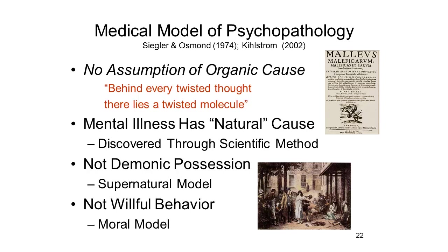I want to talk about the medical model of psychopathology a little bit more, because there's often considerable misunderstanding about what exactly the medical model says about mental illness. It's commonly believed, and often presented this way in textbooks, that the medical model ascribes mental illness to organic causes—that every psychiatric syndrome is ultimately some kind of organic brain syndrome. As one enthusiast once put it, behind every twisted thought, there lies a twisted molecule. In fact, this somatogenic view of mental illness is quite popular, but it's not really what the medical model is all about. All the medical model asserts is that mental illness has natural causes.